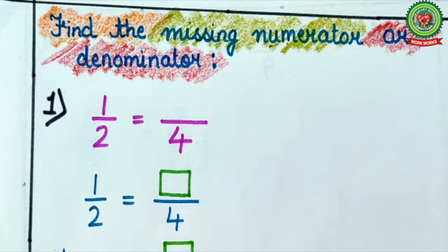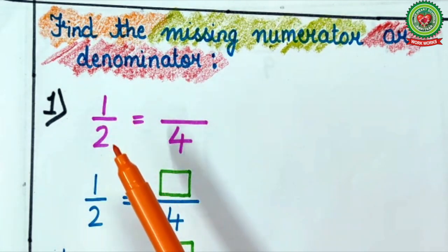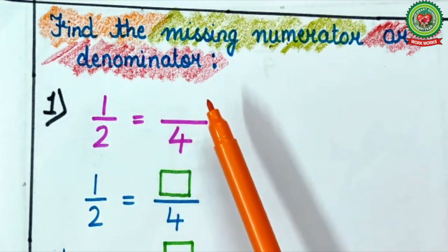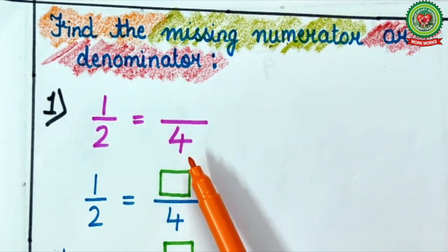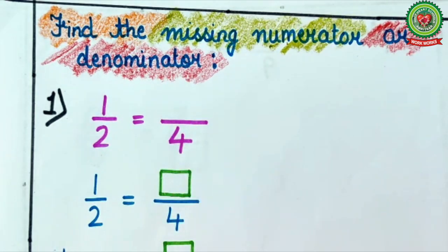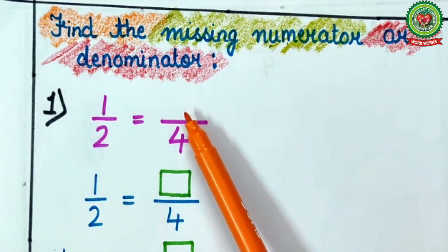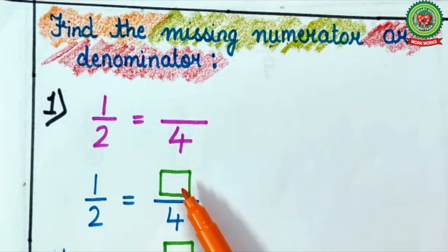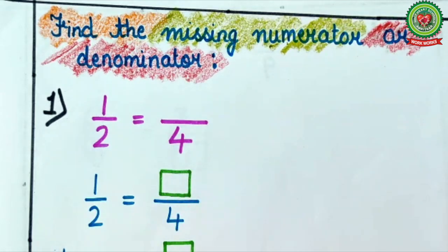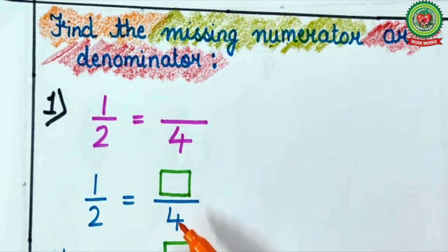Here the first example is 1 upon 2 equals to blank upon 4. The first step is at the place of blank you will put a box. So it becomes: 1 upon 2 equals to box upon 4.